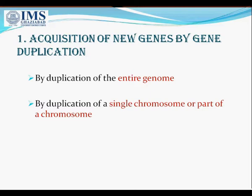A point to note here is that duplication of individual human chromosomes results in a cell that contains three copies of one chromosome and two copies of all the others. This condition is called trisomy, and it is lethal or results in a genetic disease such as Down syndrome.